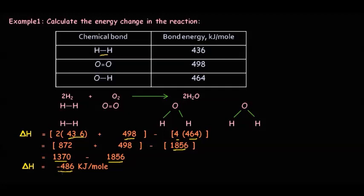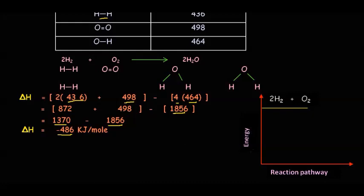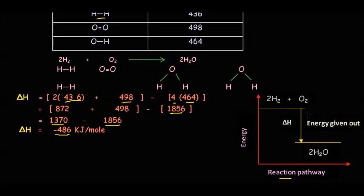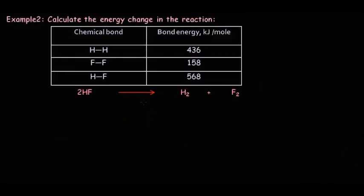If we draw an energy level diagram for this reaction, energy is on the y-axis and reaction pathway on the x-axis. The energy of the reactants is at a higher level and the products at a lower level. The difference in energy is ΔH, representing the energy released in this exothermic reaction.